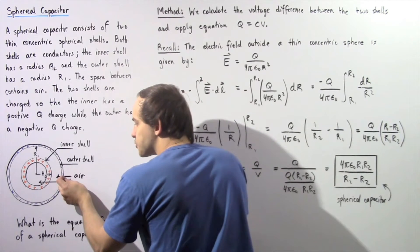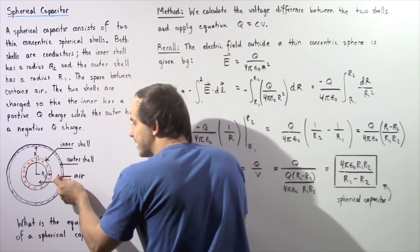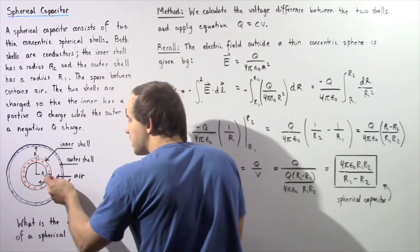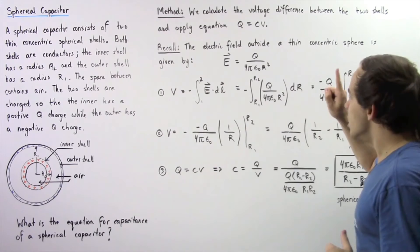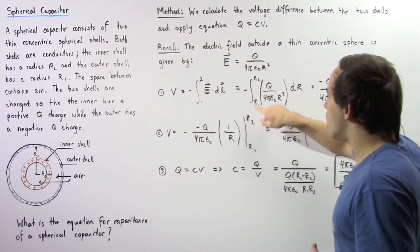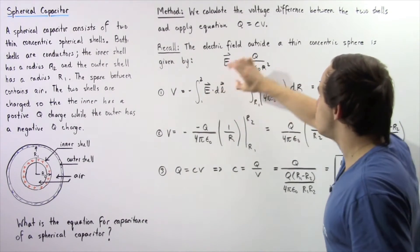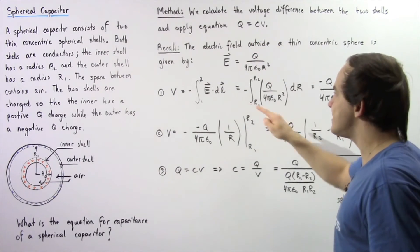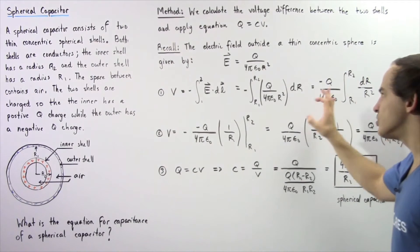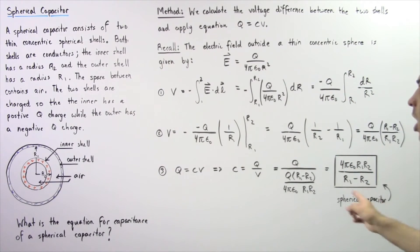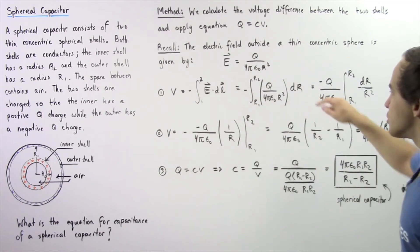We essentially begin at this region and integrate along all the way up to the radius of the inner shell. We replace 1 with r1, 2 with r2, E with this ratio, and dl with dr. Now we're integrating with respect to r and no longer l.